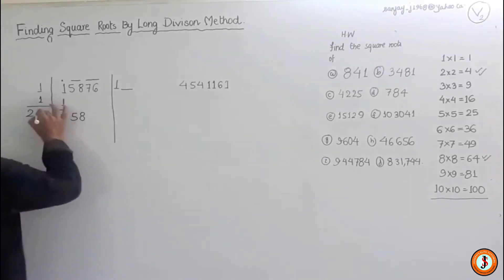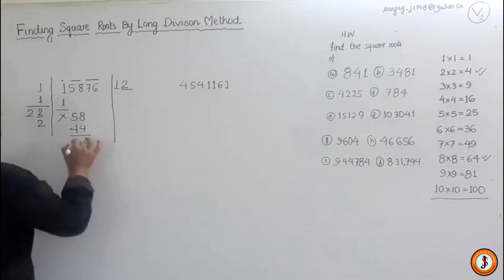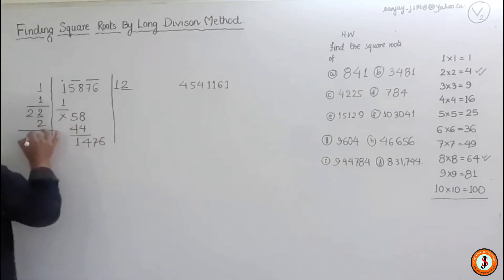So we put two over here. So twenty-two multiplied by two is forty-four. Obviously four comes down, one comes down, and we have seventy-six.